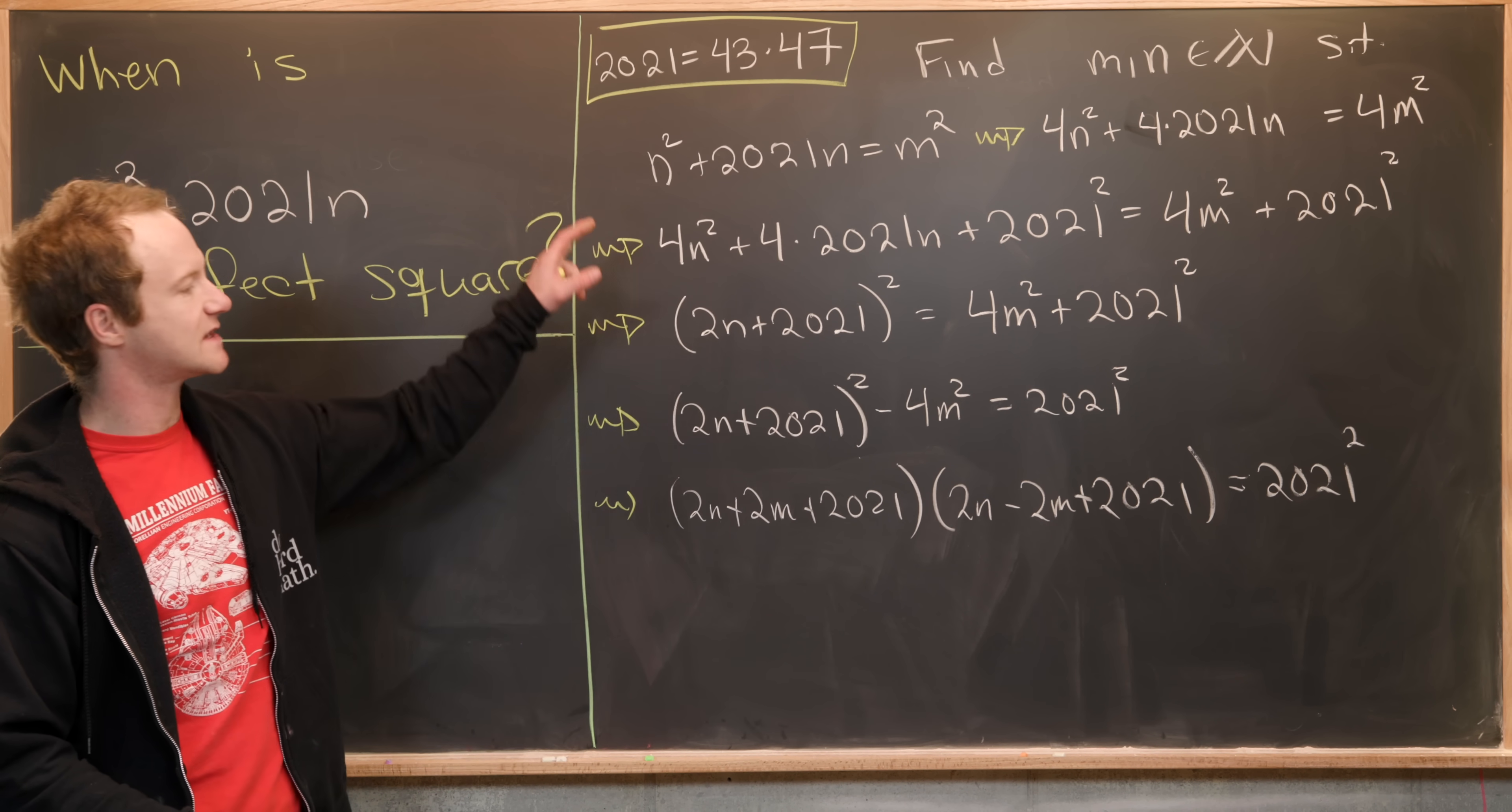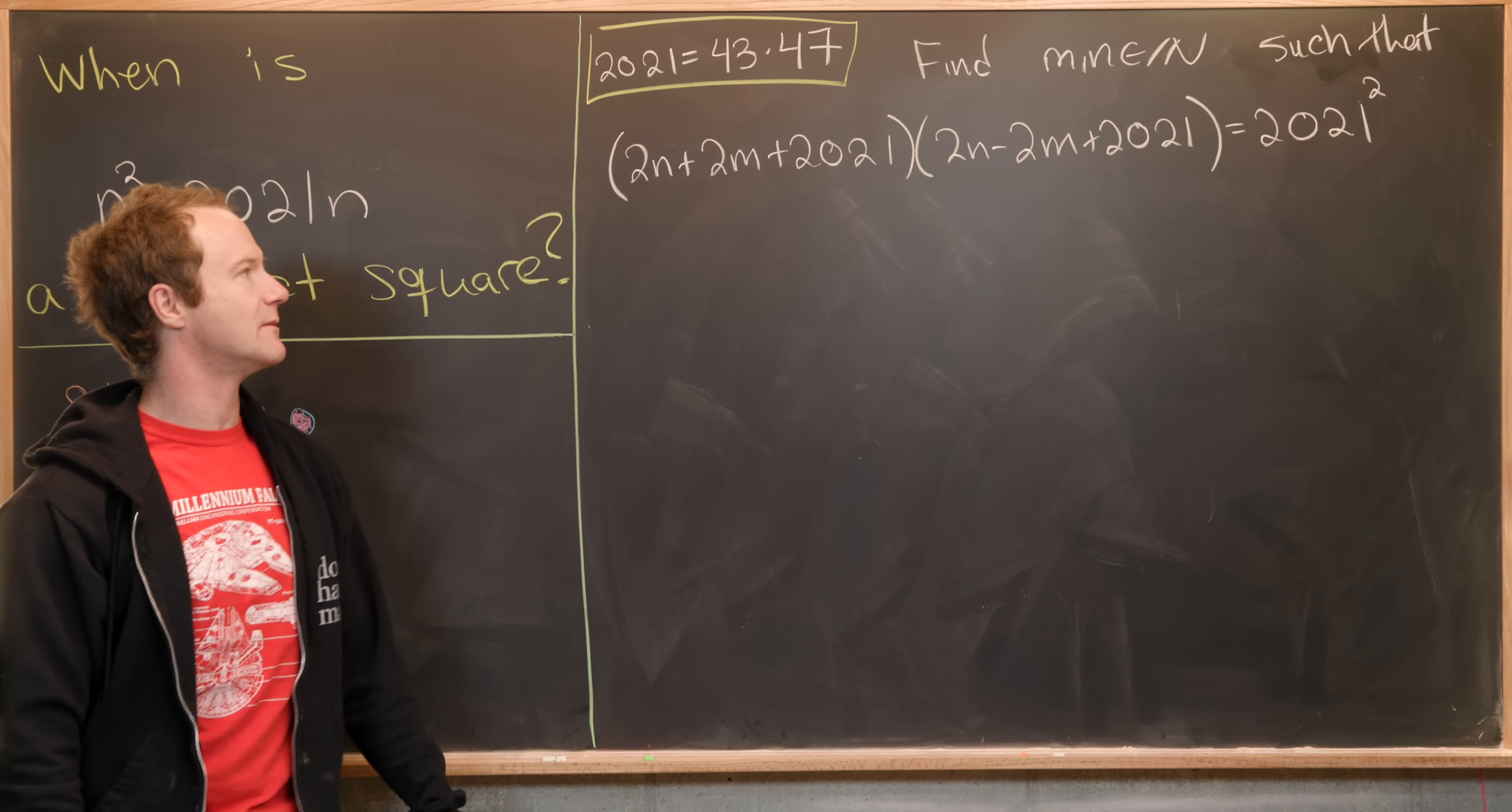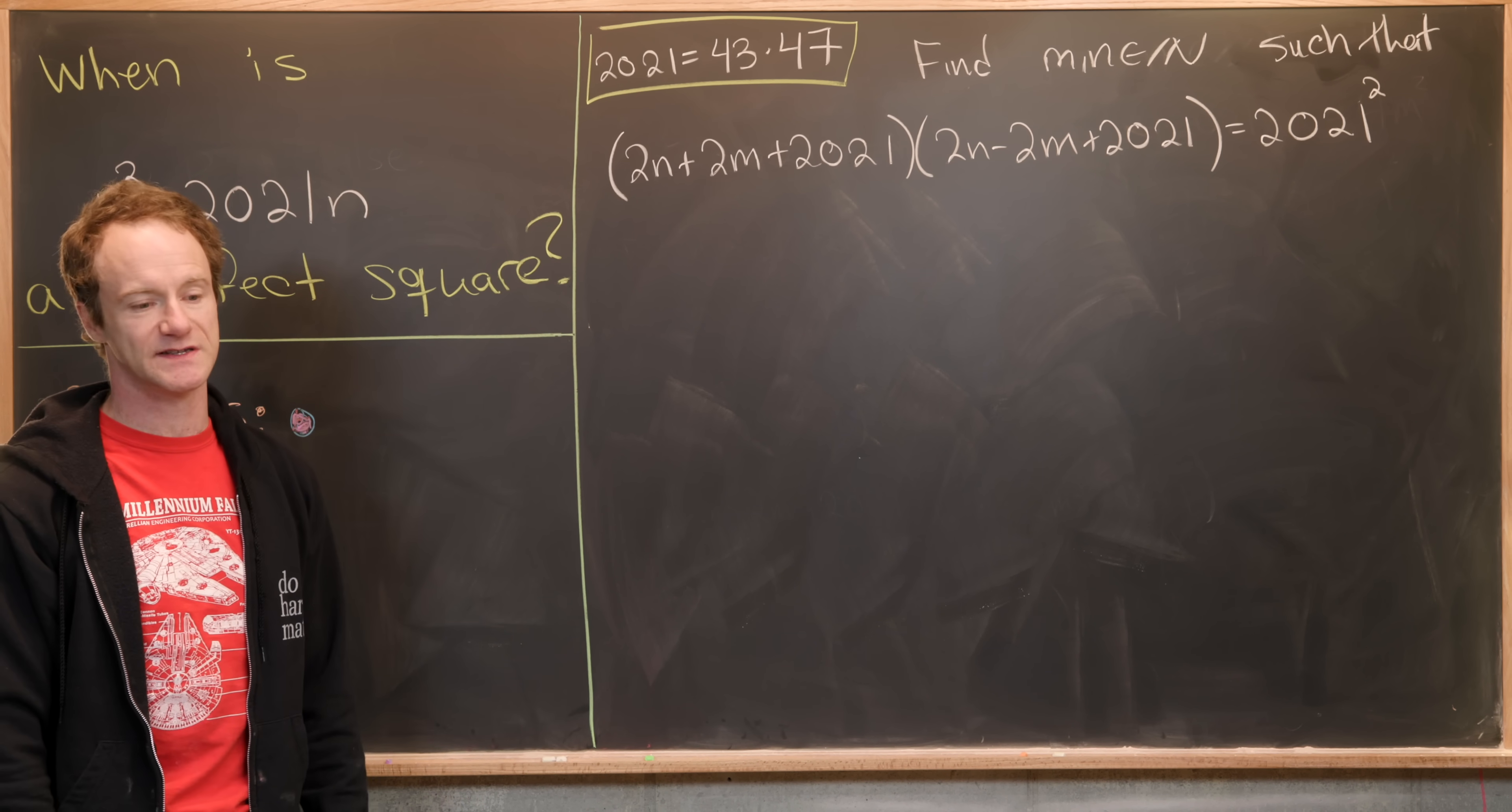Okay, let's maybe go ahead and bring this up and we'll finish it off. So on the last board, we argued that we really just need to find m and n satisfying this equation: (2n + 2m + 2021)(2n - 2m + 2021) = 2021², where I recall that 2021 is 43 times 47.